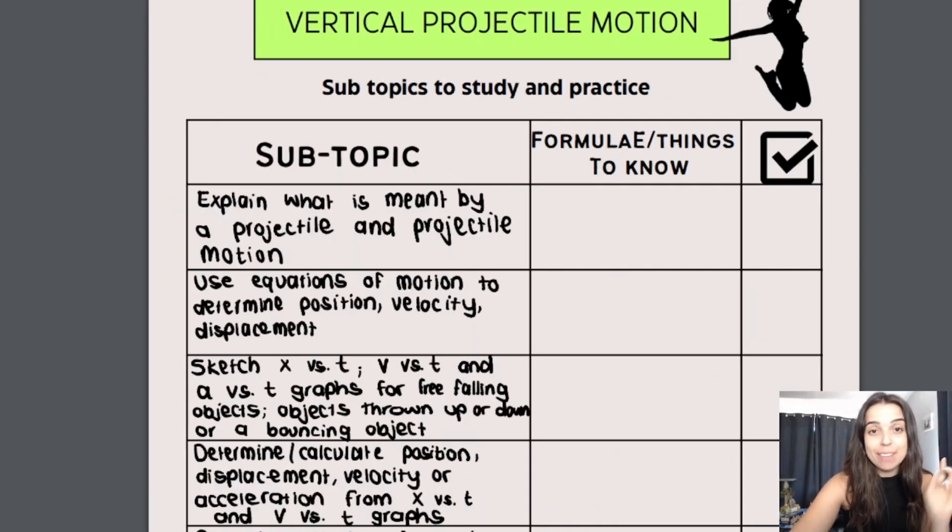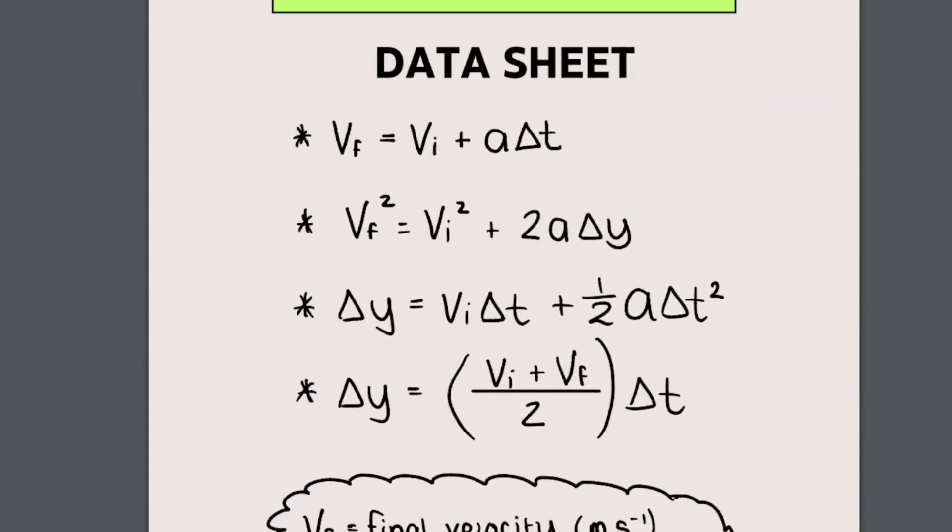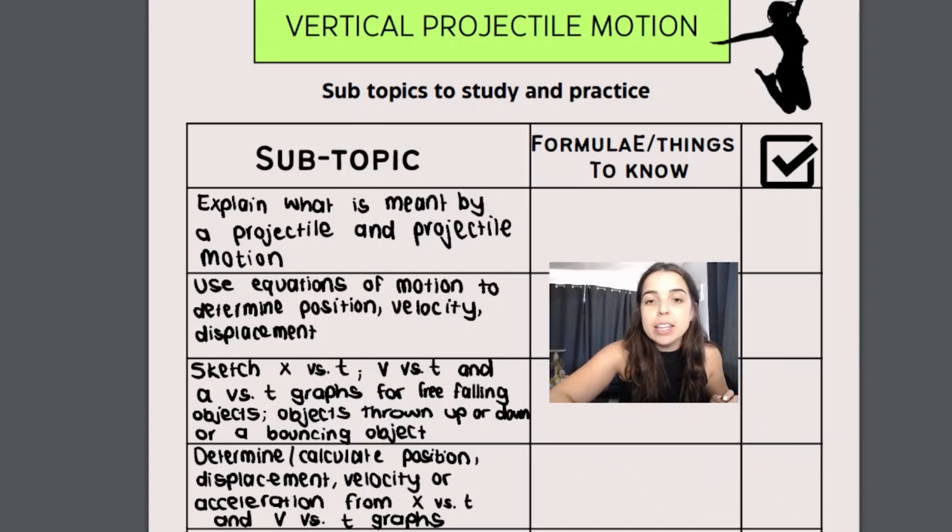Our second topic for term one is called vertical projectile motion. In grade 10 you did something called equations of motion and you did graphs of motion. If I quickly go down to my data sheet over here you will remember exactly what I'm talking about when you see your formulae. Those things over there are our equations of motion. What we did in grade 10 is we did horizontal motion. What I mean by that is you can remember we did for example a car traveling along a road, maybe two cars traveling along a road and then one hits the brakes and they ask you to calculate the stopping distance or the time it took from car A to reach car B. We did horizontal motion in grade 10. Now we're going to be focusing on vertical up and down motion.